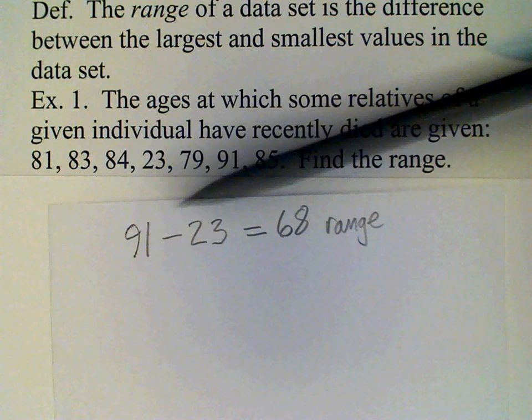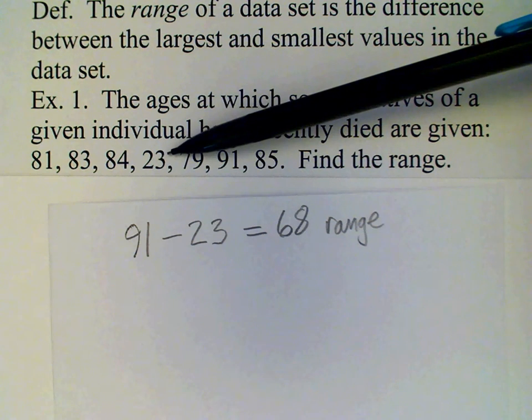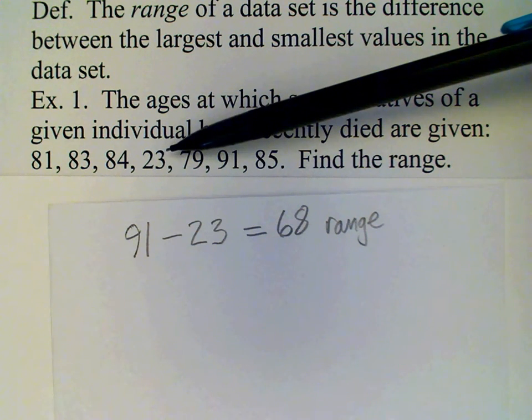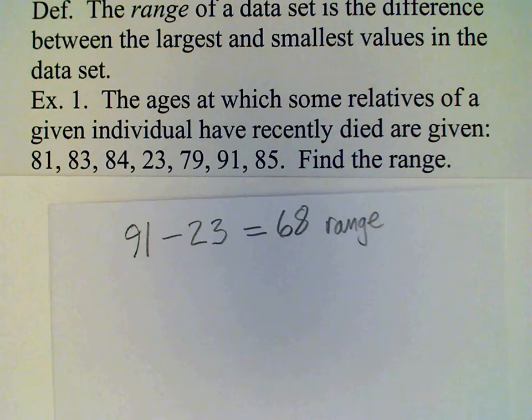These other individuals look as though they may have died of old age, but this one here may be cousin Billy who died in a motorcycle accident. This value may not really be representative of the longevity of this family.